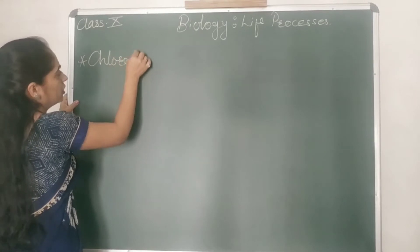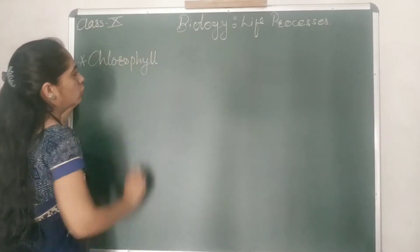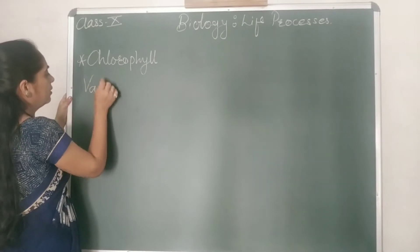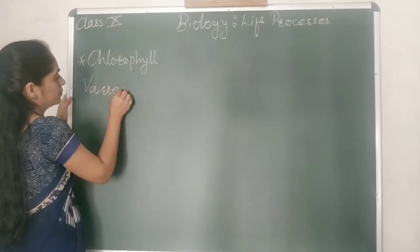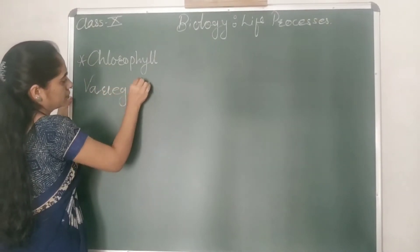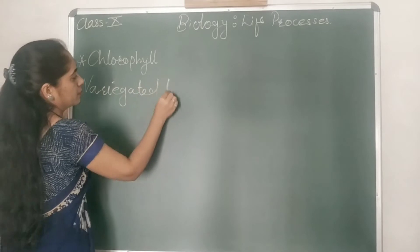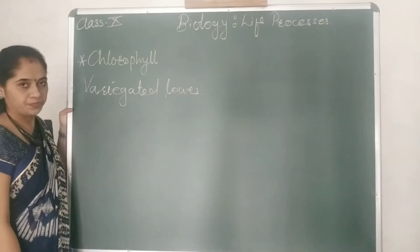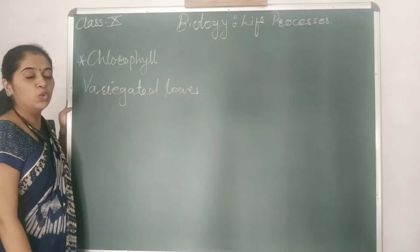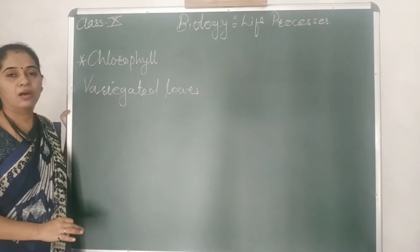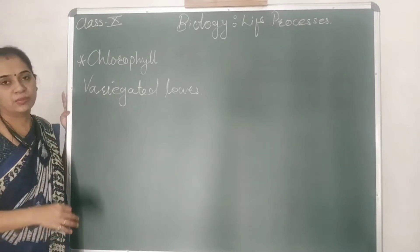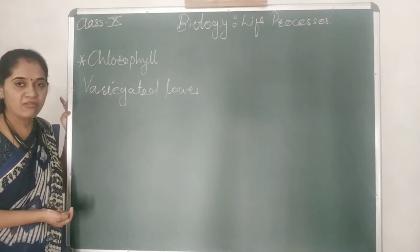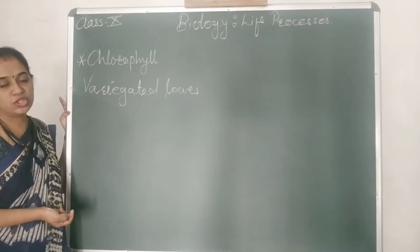For this experiment, what we have to take — we have to take variegated leaves. Now what is meant by these types of leaves? You may have observed that there are some ornamental or showy plants which have a whitish color at their periphery or in between.